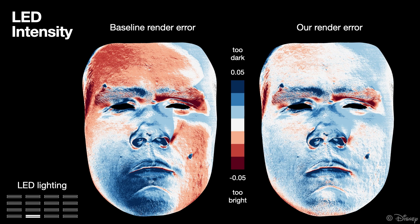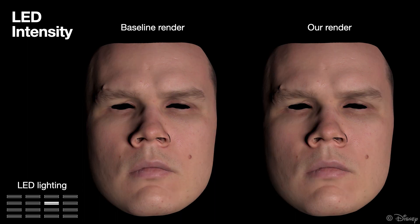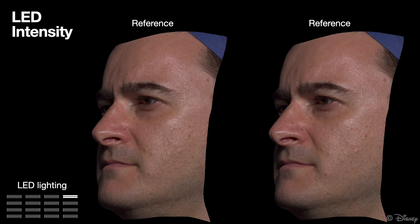While white areas indicate imperceptible error, blue tones indicate the render is too dark, and red tones indicate that the render is too bright. Here we see a similar example under lighting from a different pair of LED bars. Optimizing the intensity of light coming from each LED bar once again helps to significantly reduce rendering error. And one more example with a different face, camera, and lighting direction.